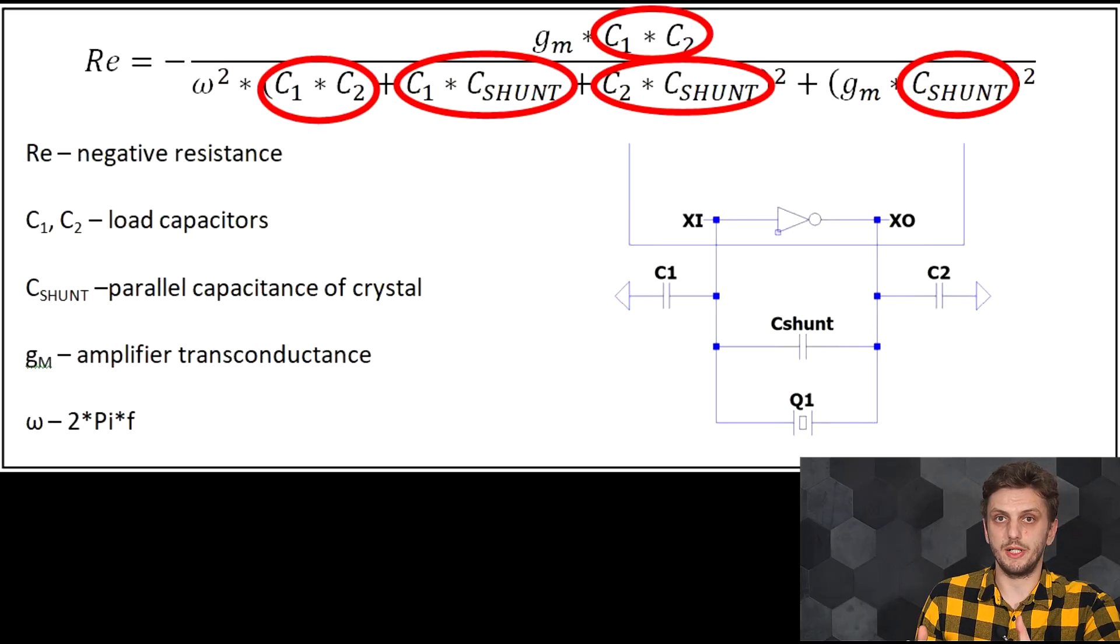So what can you do if you don't have enough gain margin? If the possibility exists, you could increase the gain of the amplifier by some registry settings, as mentioned in a previous video on drive level measurements. But what else? Well, let's have another look at the parameters impacting this value. So other than the gain of the amplifier, you have all these capacitors. Couldn't something be done about those?